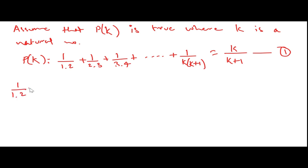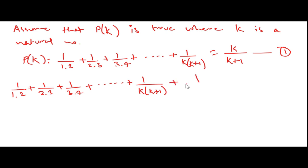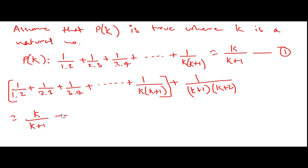For P(k+1): the sum 1/(1·2) + 1/(2·3) + ... + 1/(k(k+1)) + 1/((k+1)(k+2)). The first portion is given by equation 1, so this equals k/(k+1) + 1/((k+1)(k+2)). Taking LCM = (k+1)(k+2): [k(k+2) + 1] / [(k+1)(k+2)].